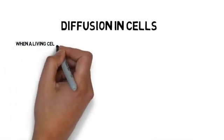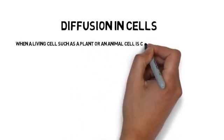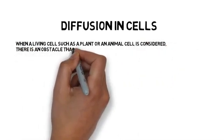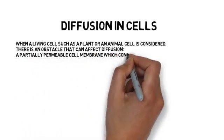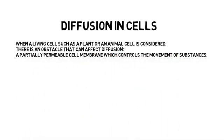Diffusion in cells. When a living cell such as a plant or an animal cell is considered, there is an obstacle that can affect diffusion: a partially permeable cell membrane which controls the movement of substances.